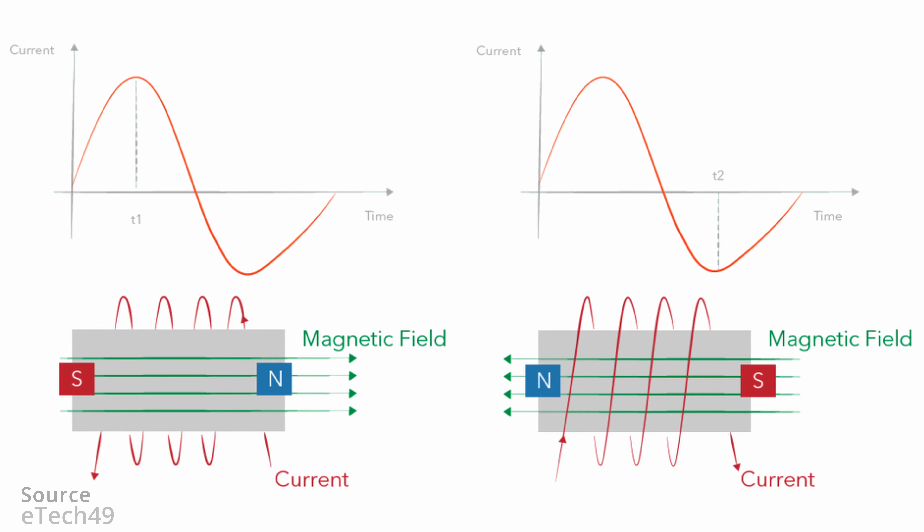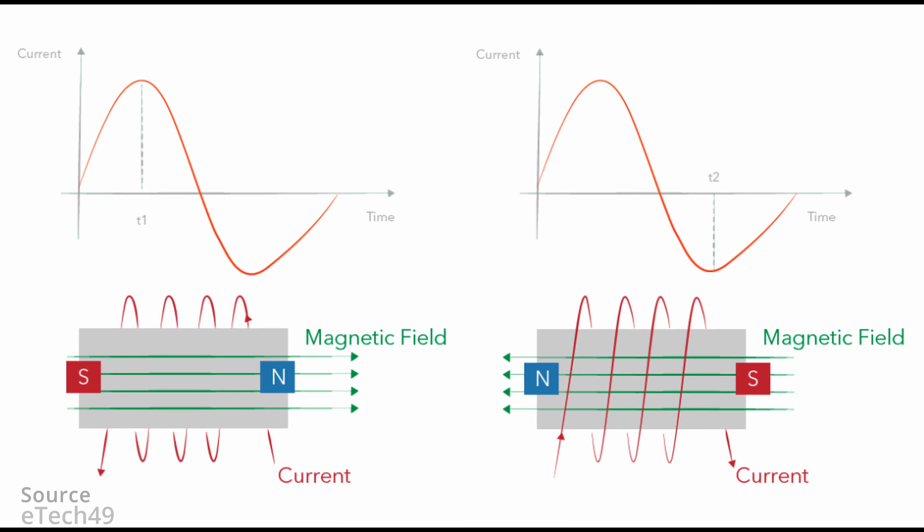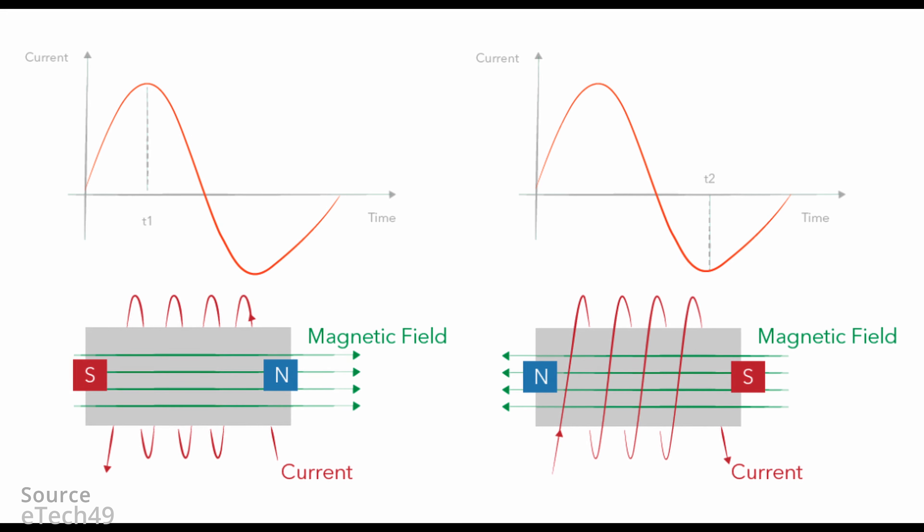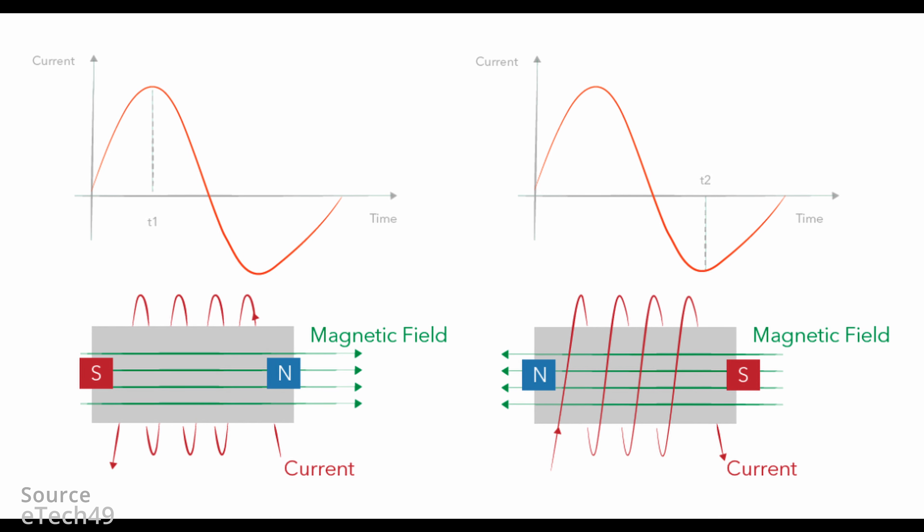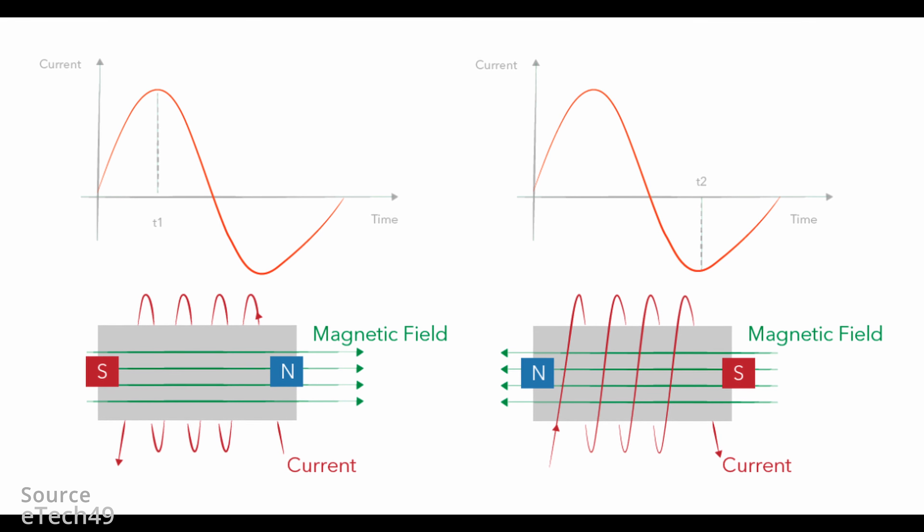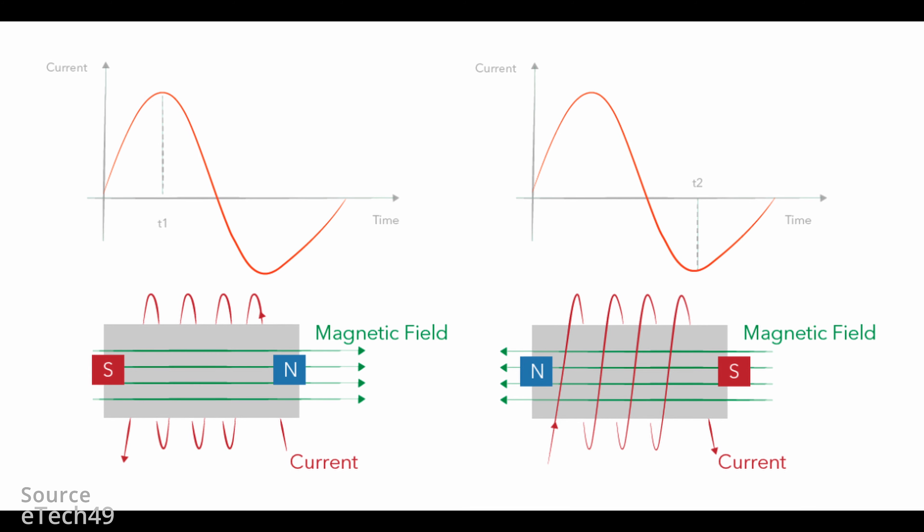When feeding the same coil by a sinusoidal current, the magnetic field produced will be oriented in the function of the current sign.